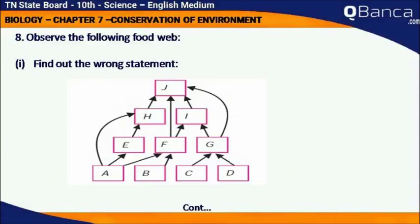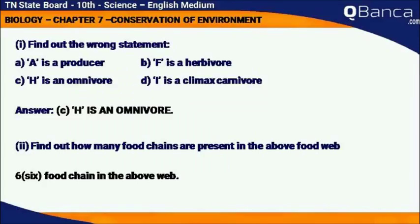Observe the following food web. Find out the wrong statement: A is a producer, F is a herbivorous, H is an omnivore, I is a climax carnivore. Answer: H is an omnivore — that is the wrong statement. Find out how many food chains are present in the above food web. Answer: 6 food chains are found in the above food web.